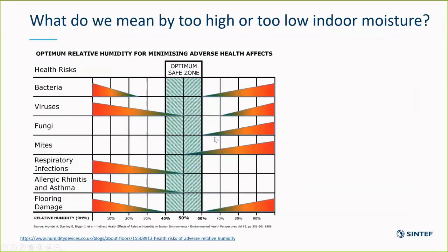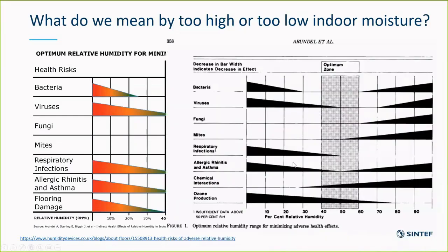What do we mean by too high or too low indoor moisture? Most of you have encountered graphs looking more or less like this, trying to convey the impression that there is an optimum safe zone of relative humidity between 40 and 60 percent indoors. If you follow these you will minimize adverse health effects. This is often referred to a publication from 1986 by Aaron Sterling at ASHRAE. You might note there are some discrepancies between the graph to the left and the graph to the right, and if you spend time on the internet you can find a nice collection of slightly different graphs.